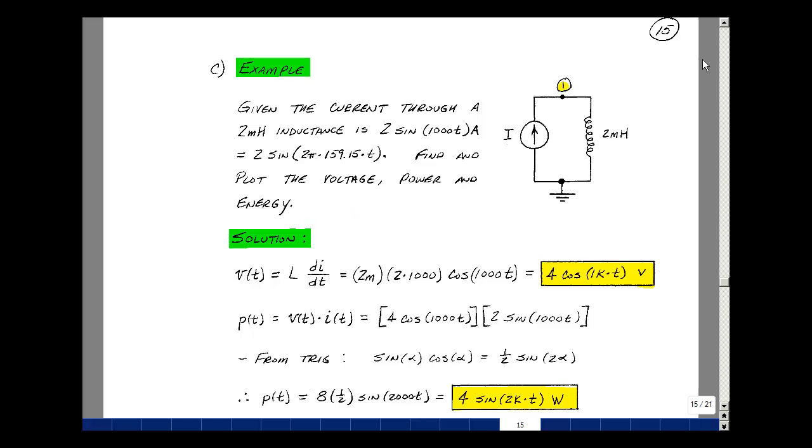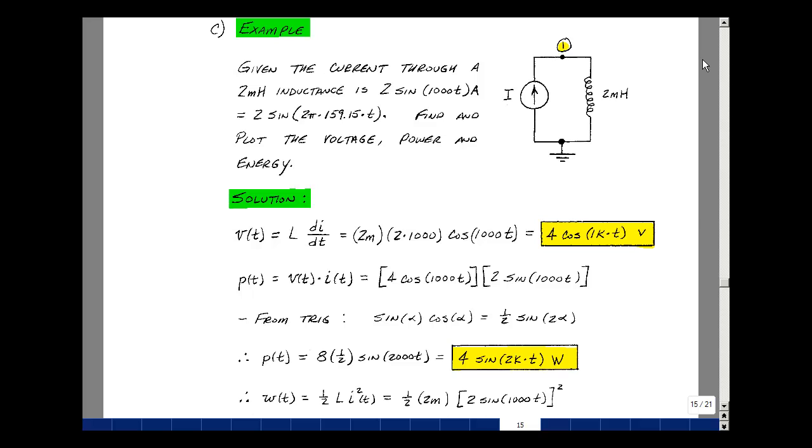Previously in the chapter, we had a formula for the voltage across an inductance at any instant in time, and it's LdI/dt. So L is 2 mH, and we're going to differentiate 2 sine of 1,000t.